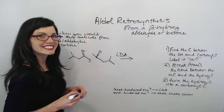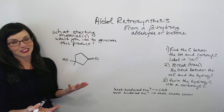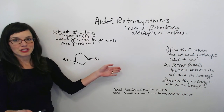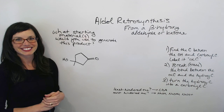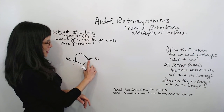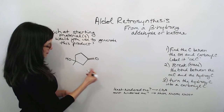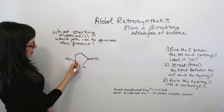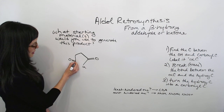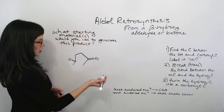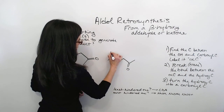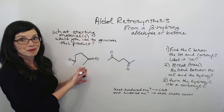You ready to try one on your own? What starting material or materials would you use to make this product? Don't freak out — go through these exact same steps. Hopefully you looked between the carbonyl carbon and the hydroxy carbon and labeled the alpha, then erased the bond between the alpha carbon and the hydroxy carbon, then turned the hydroxy carbon into a carbonyl. Now you can see the original starting material — if you stretch it out a bit, it's got six carbons.